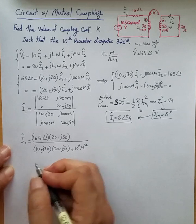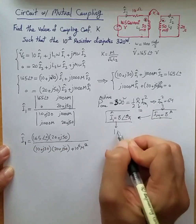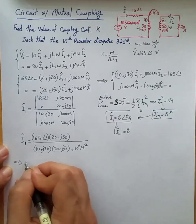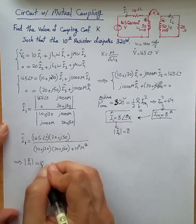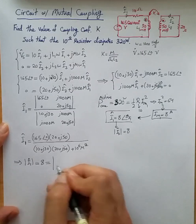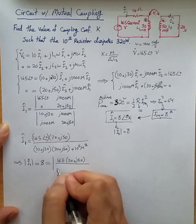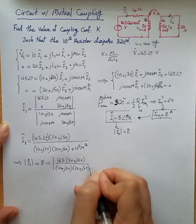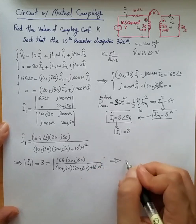The only thing that matters is the magnitude of this because that is the information we have. The magnitude of phasor I1 is 8, so I'm going to take the magnitude, or amplitude. What I get from this is it should be 8, and that equals the magnitude of 165 times (20 + j50) divided by (10 + j30)(20 + j50) minus 10⁶M². If you solve for this, you will find that M has to be equal to